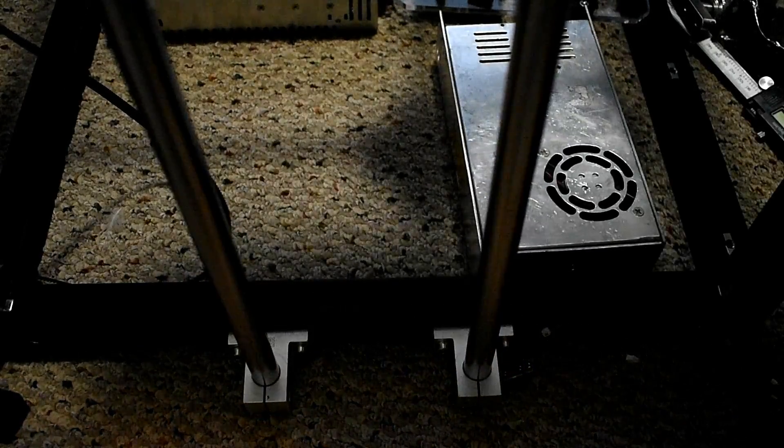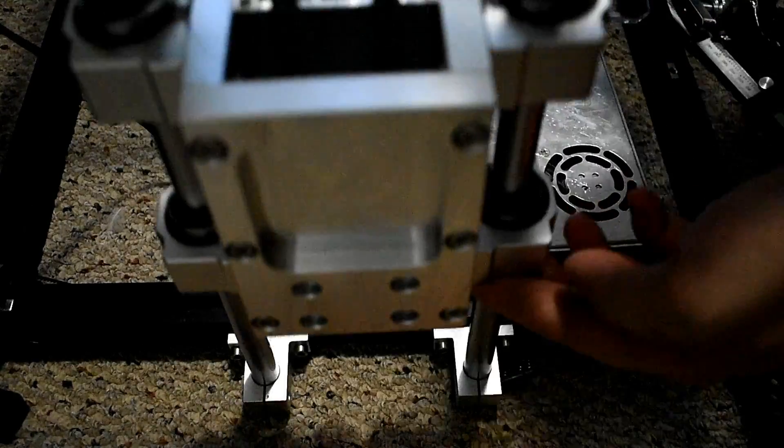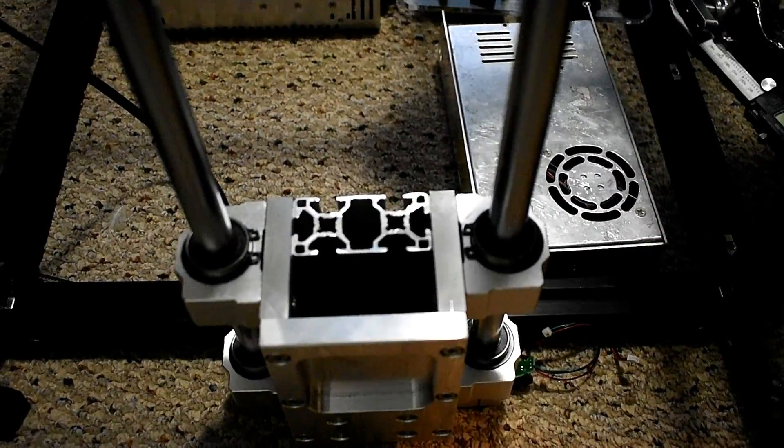The exposed extrusion on this shuttle is basically going to get an angle bracket and another piece of extrusion, which is going to support some kind of kinematic mount for the table.